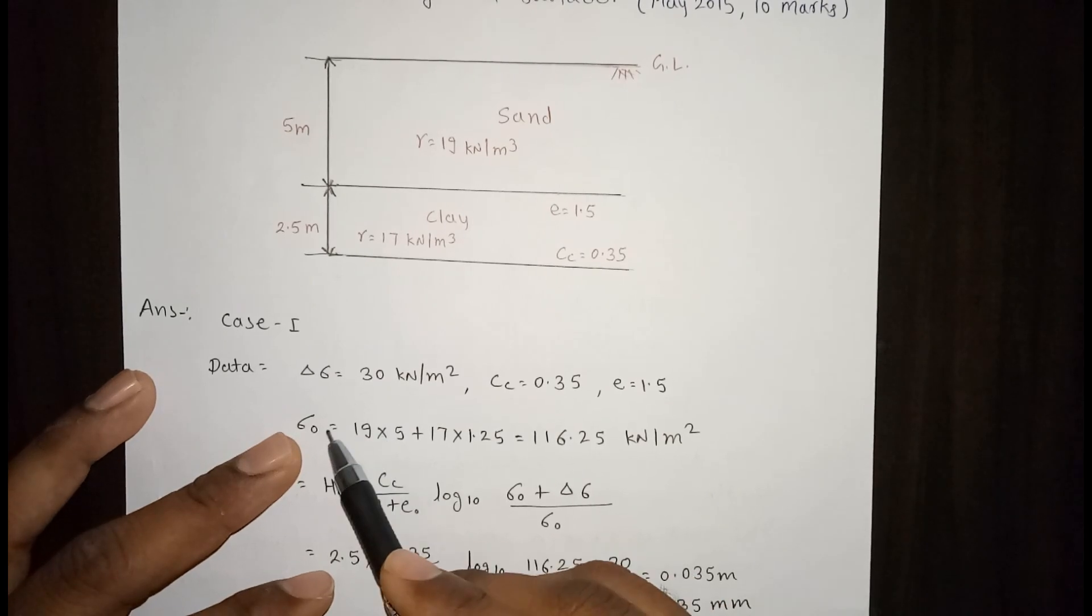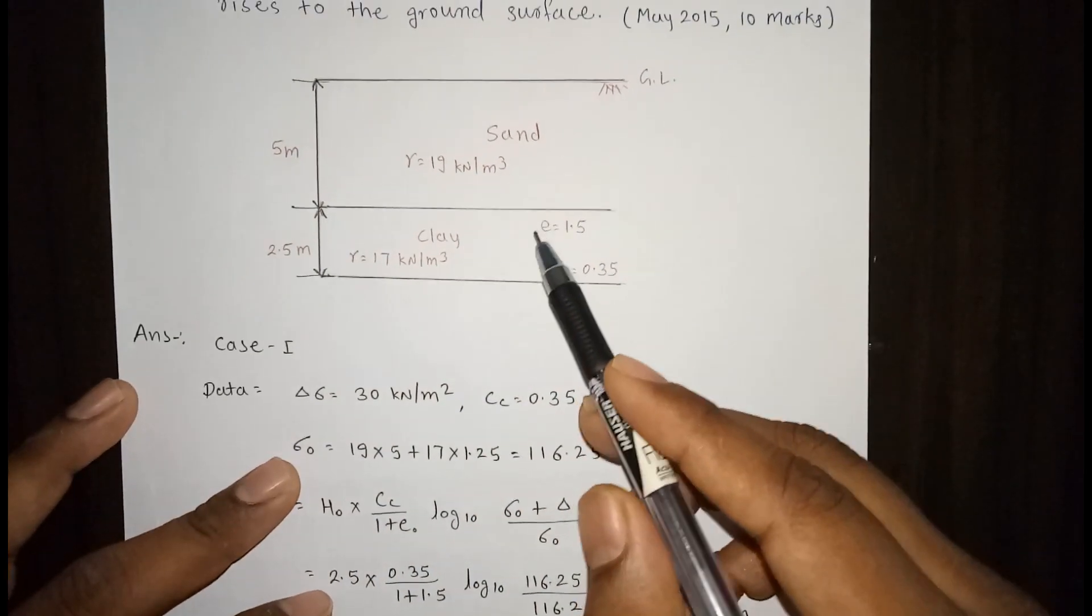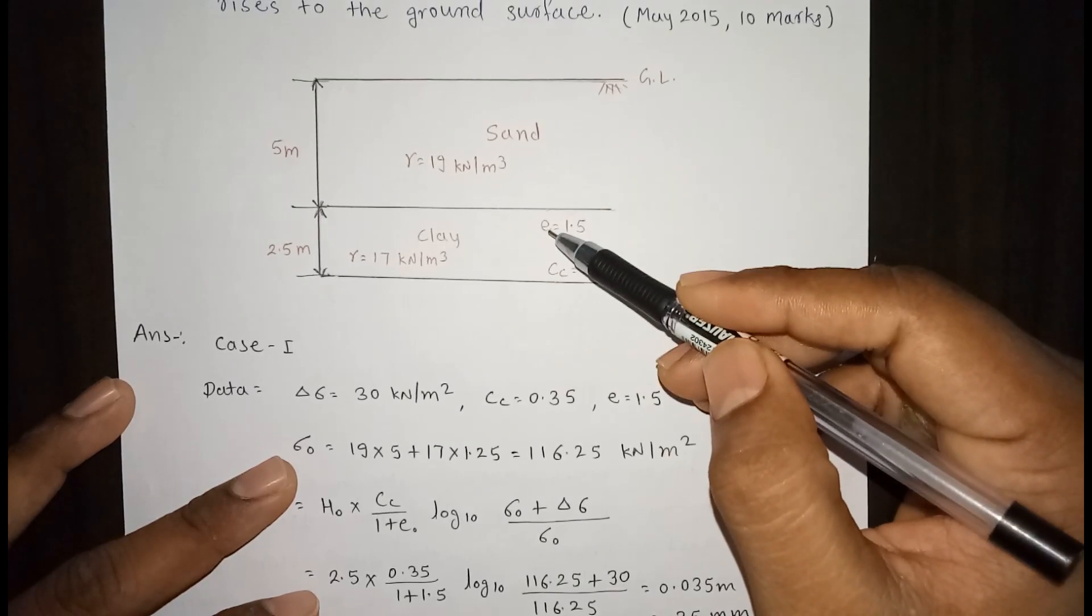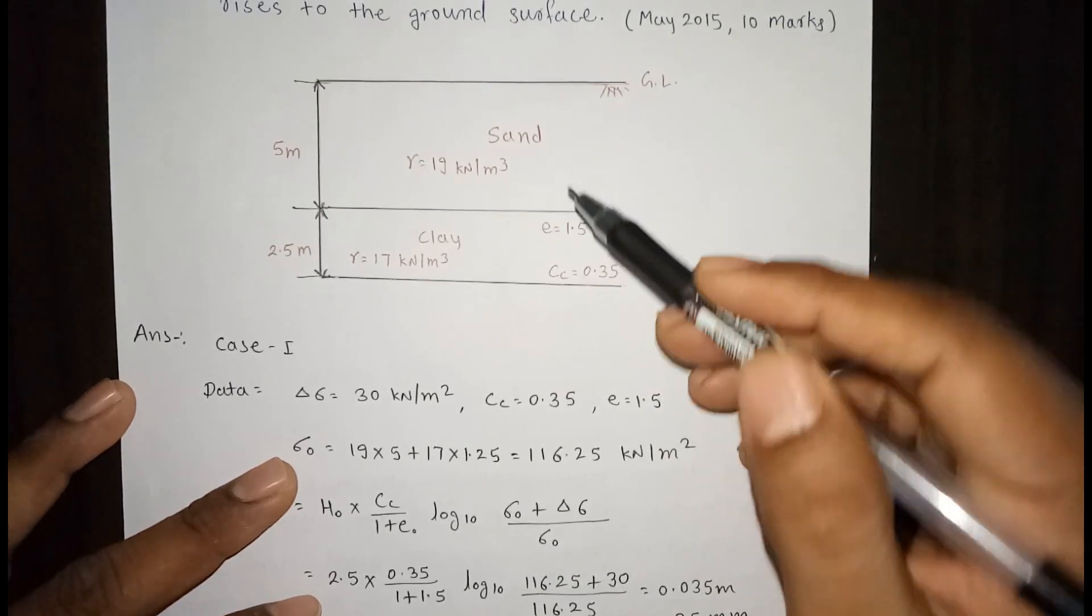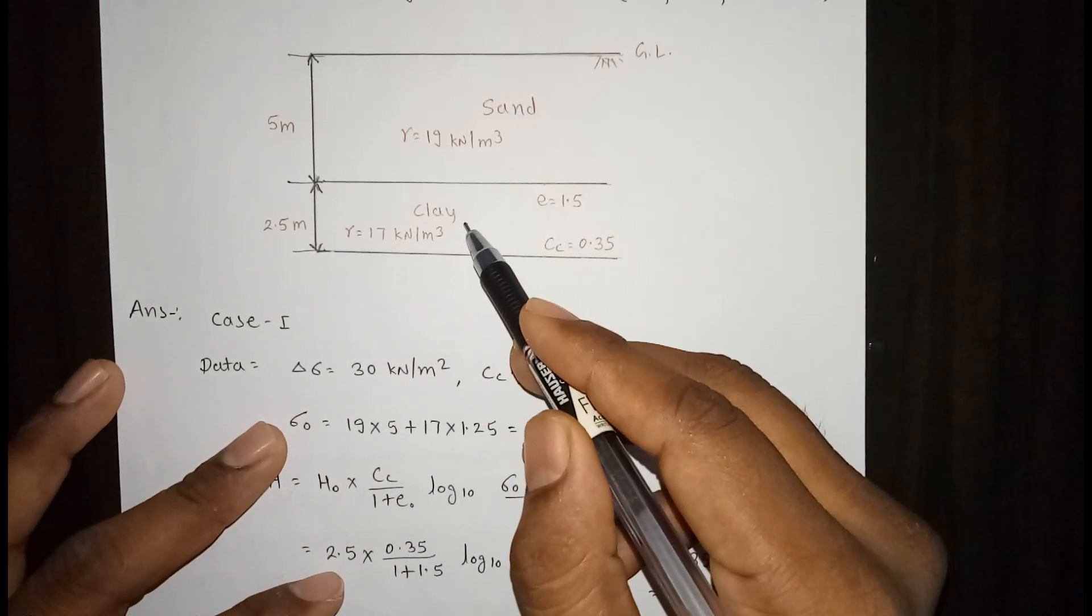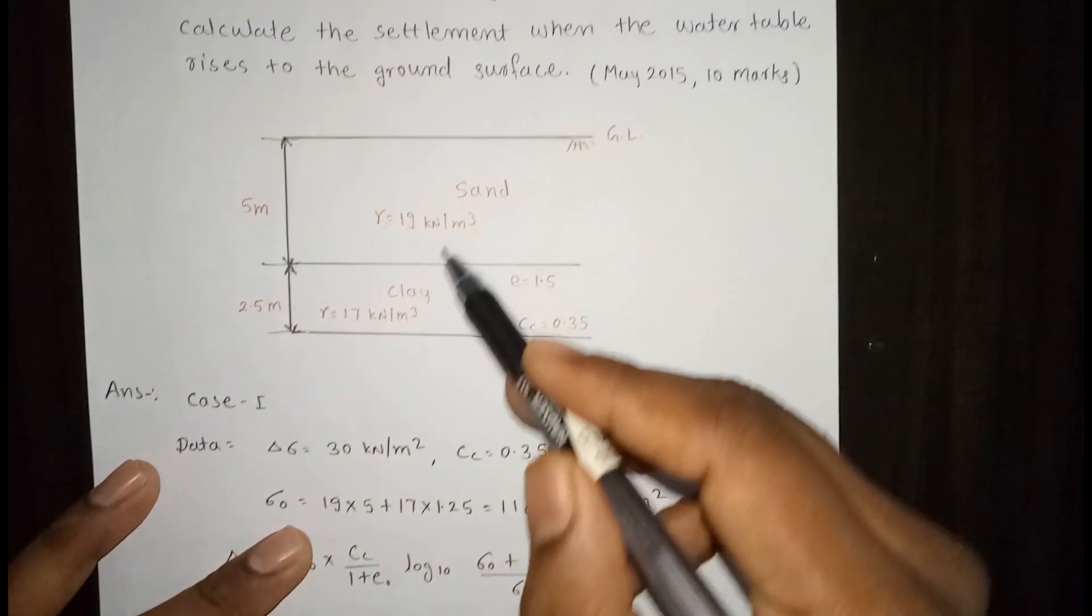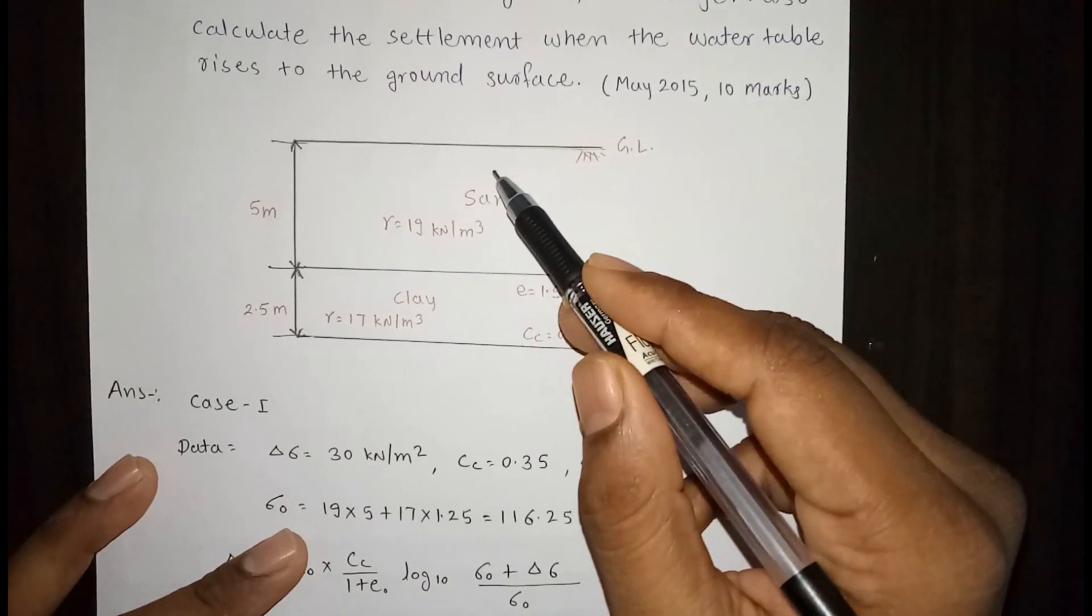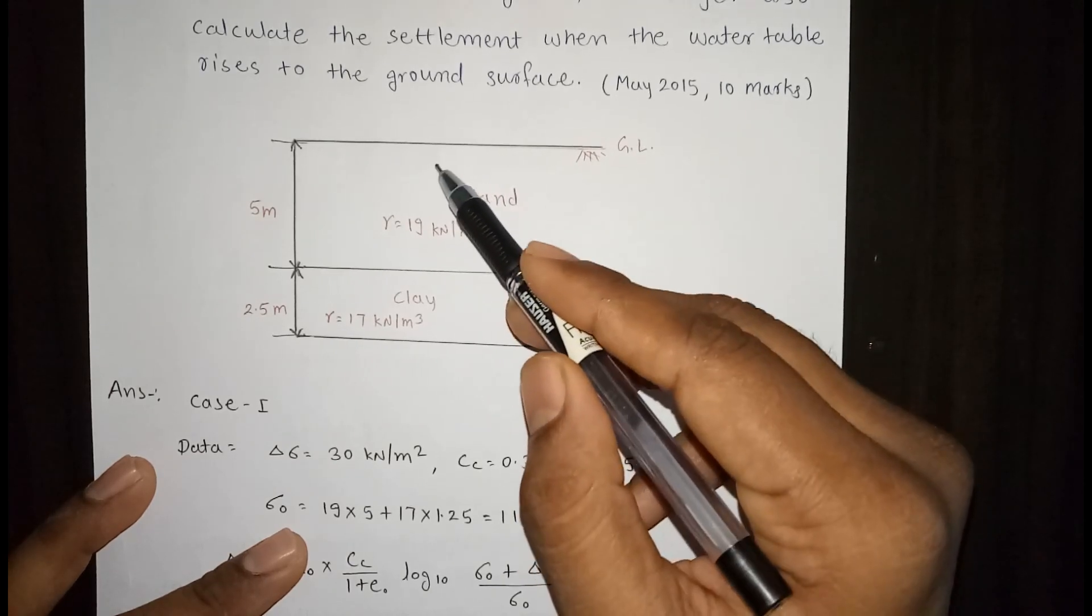Now calculate sigma 0. Sigma 0 is the effective pressure, that is the pressure till the center of the clay layer. Sigma 0 is equal to z times gamma, where z is the depth and gamma is the unit weight of the soil.